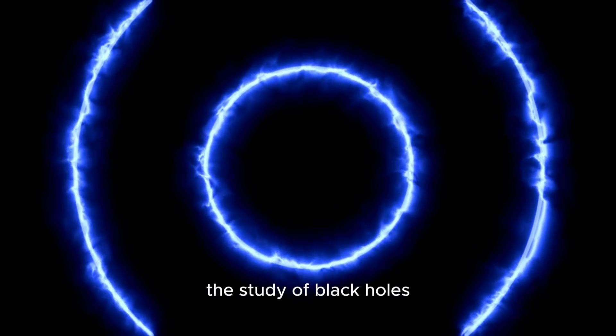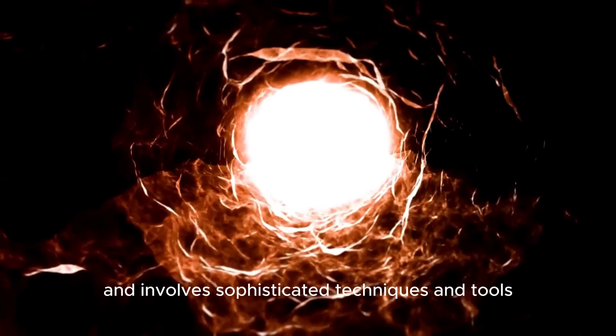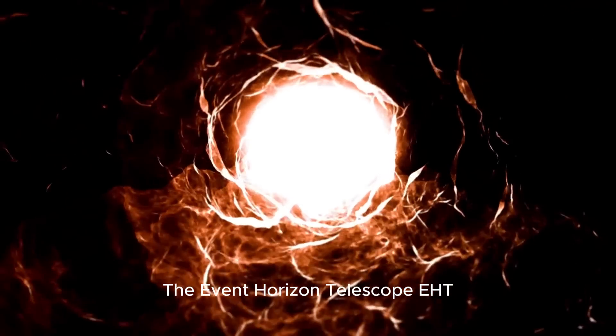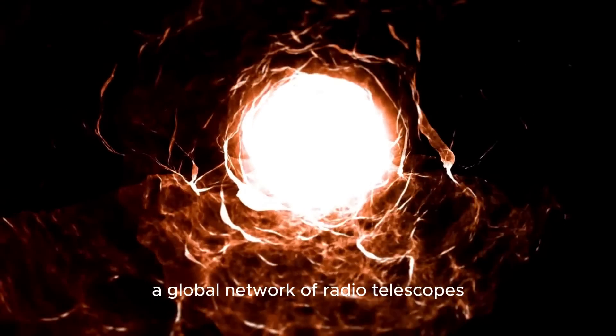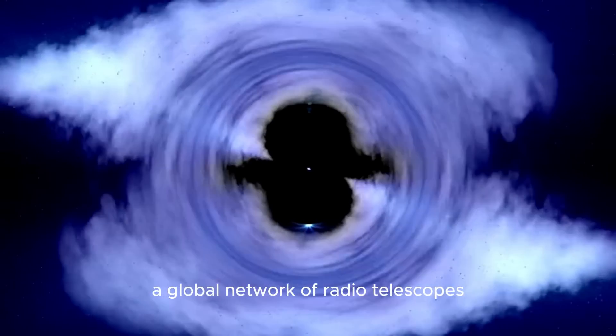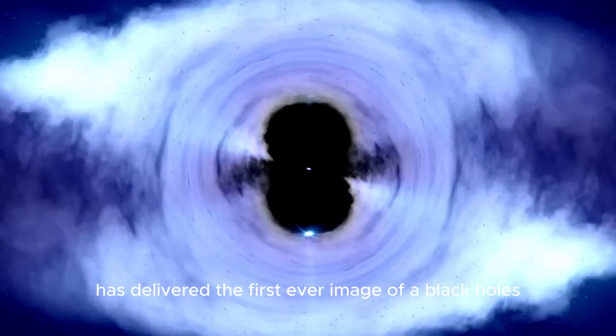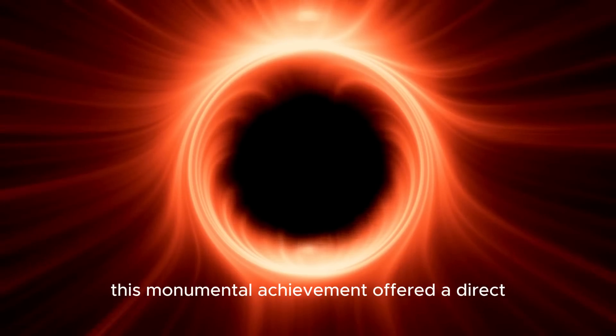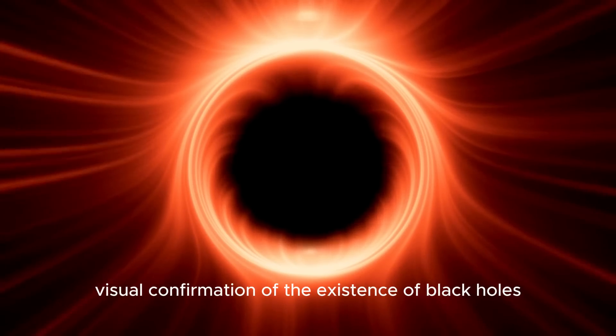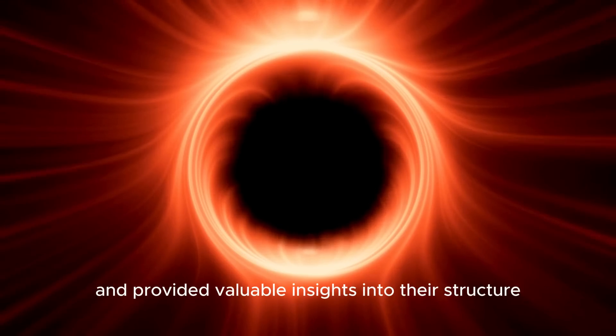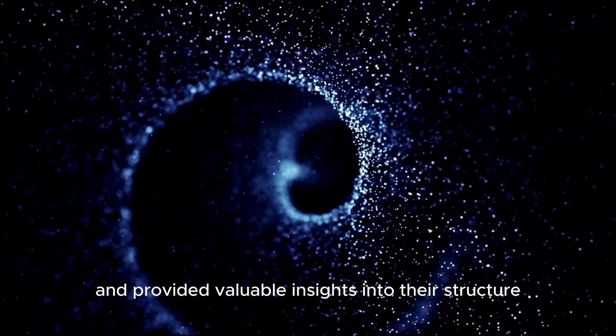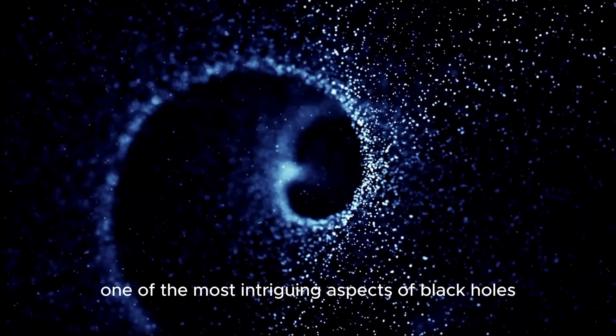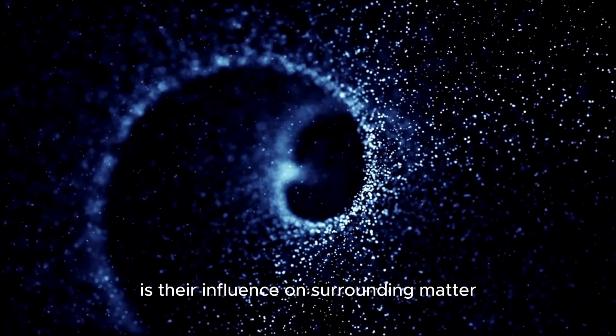The study of black holes extends beyond the theoretical realm and involves sophisticated techniques and tools. The Event Horizon Telescope, EHT, a global network of radio telescopes, has delivered the first-ever image of a black hole's event horizon in the galaxy M87. This monumental achievement offered a direct visual confirmation of the existence of black holes and provided valuable insights into their structure and the surrounding accretion disk.